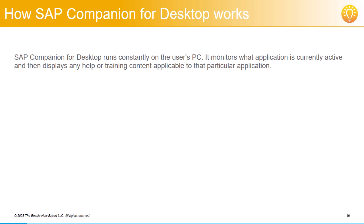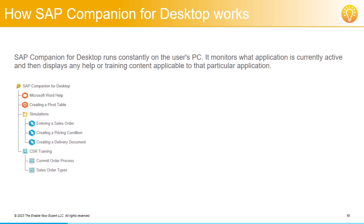First of all, the content that's to be made available as in-application help for any application is collected together in a special type of group in the SAP EnableNow work area. Technically, this is just a regular group object with a subtype of SAP Companion. This group can include the SAP Companion for Desktop specific content object types of Context Help Project and Guided Tour, but can also include simulations, books and book pages, and even non-SAP EnableNow content such as PDFs or other files.